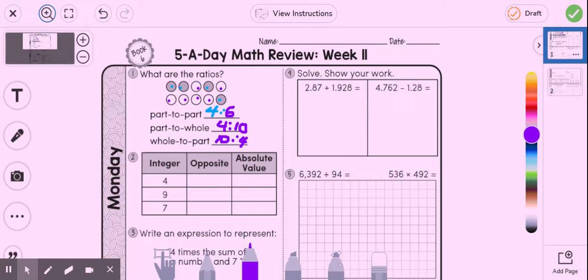All right, number two, the integer and then we're going to do the opposite. So the opposite of positive four is negative four. The opposite of positive nine is negative nine. The opposite of positive seven is negative seven.